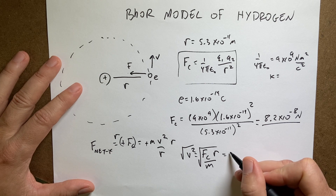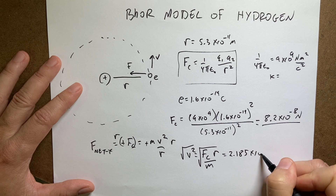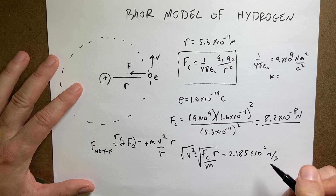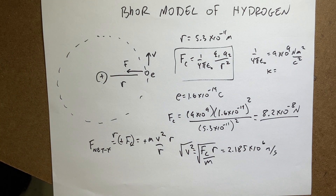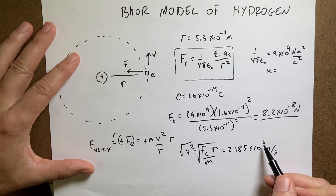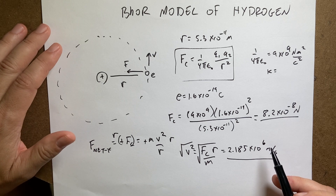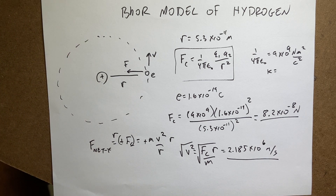Taking the square root and plugging in the numbers gives v = 2.185×10⁶ meters per second. This is really interesting — it's kind of fast, but it is slower than the speed of light, so that's good. This model does show a lot of things that are consistent with real life.